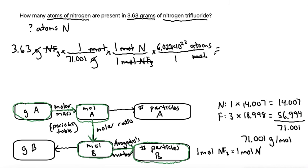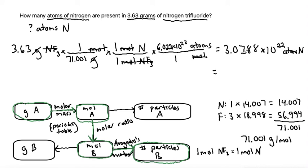Grabbing the calculator: 3.63 ÷ 71.001 × 6.022 × 10²³ gives 3.0788 × 10²² atoms of N. Rounding to 3 significant figures, our final answer is 3.08 × 10²² atoms of N present in 3.63 grams of nitrogen trifluoride.